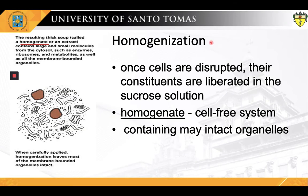The second phase is that of homogenization. Once the cells have been disrupted, their constituents will be liberated into a buffer solution that is isotonic to stop osmotic damage. The resulting suspension is a cell-free system containing many intact organelles, known as the homogenate. The samples are then kept cold to prevent enzymatic damage.